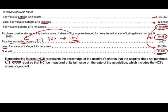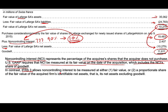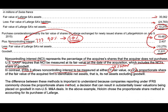Non-controlling interest (NCI) represents the percentage of the acquiree's shares that the acquirer did not purchase — for example 10%. U.S. GAAP requires NCI be measured at fair value at the acquisition date, including the NCI's share of goodwill. In contrast, IFRS allows NCI to be measured in two ways: either at fair value (like U.S. GAAP) or using the proportionate share method. Companies reporting under IFRS commonly choose the proportionate share method, which results in substantially lower goodwill.